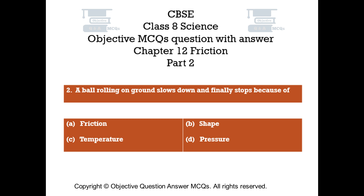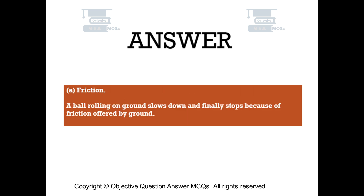The right answer is Option A: Friction. A ball rolling on the ground slows down and finally stops because of friction offered by the ground.